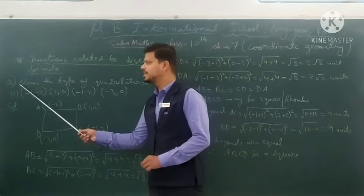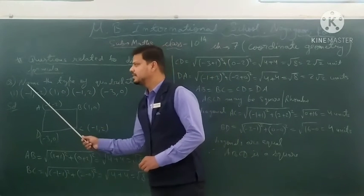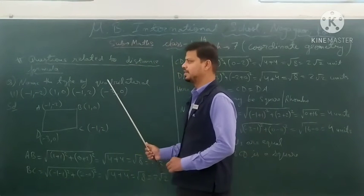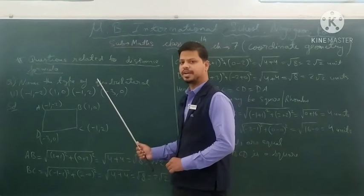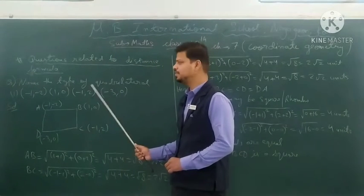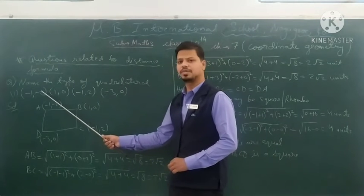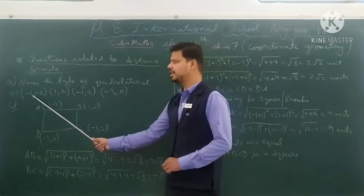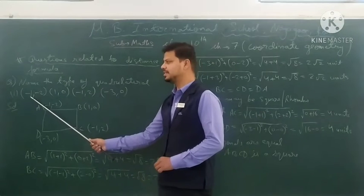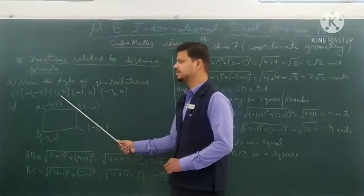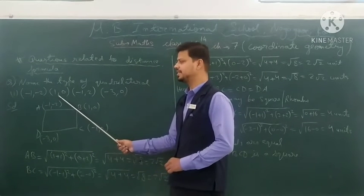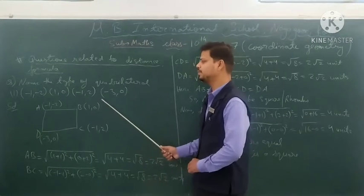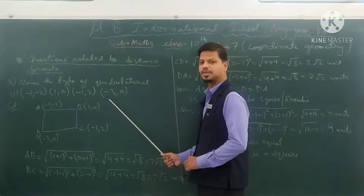The question is: name the type of quadrilateral whose coordinates of four vertices are given. The first vertex is (−1, −2), the second vertex is (1, 0), the third vertex is (−1, 2), and the fourth vertex is (−3, 0).